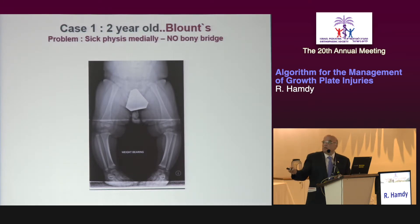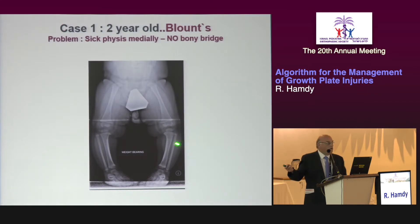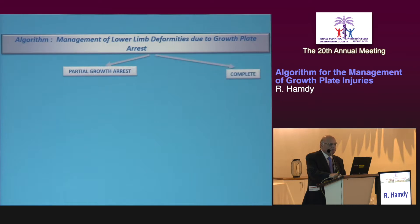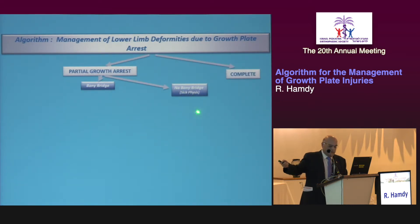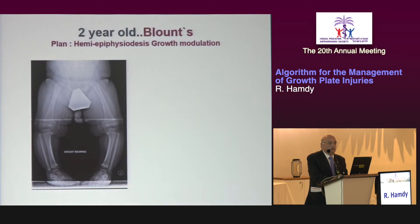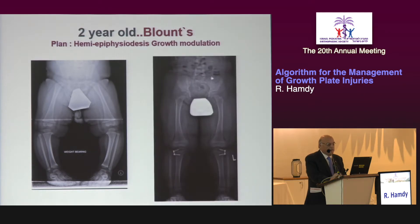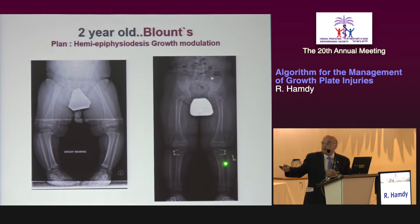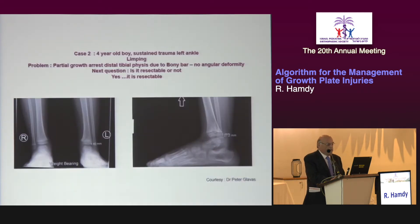Case one: a typical Blount disease patient with varus deformity. The physis is sick — Langenskiöld stage one, two, or whatever — and there is no bony bridge. Referring to the algorithm: no bony bridge, sick physis → perform hemi-epiphysiodesis and observe. This is now our standard treatment for Blount's; we have stopped using braces. A growth plate staple is placed on the lateral side, you wait until it overcorrects, and that is all that is needed.